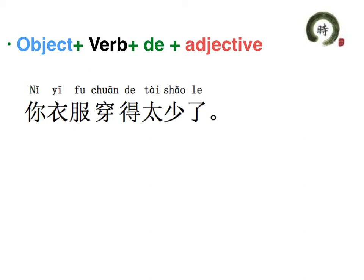Usually we say 穿衣服, but here we put 衣服 before 穿: 你衣服穿得太少了. This is because there is 得 after the verb. If 穿 has an object 衣服, we should put the object before the verb. This is our new structure in this episode: Object + Verb + 得 + Adjective. So we can say 你穿得太少了 — 'you wear too little.' But since we have 衣服 as the object of 穿, we put 衣服 before 穿.